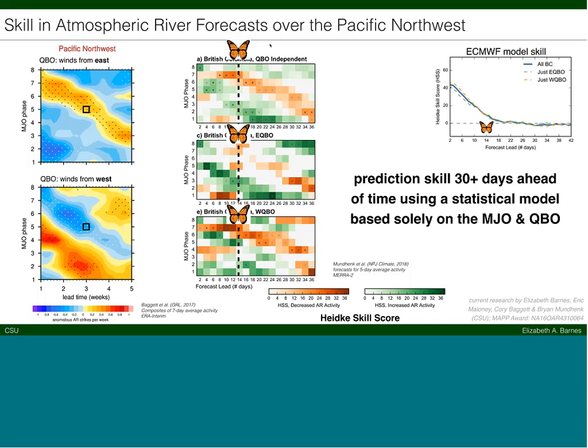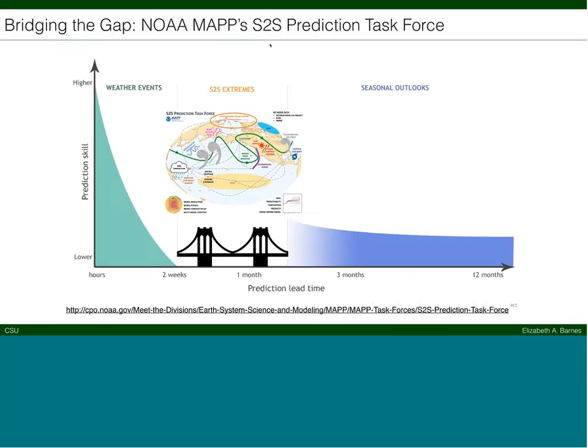With those three examples, I want to point out that the NOAA MAP S2S Prediction Task Force is working on many different facets of the S2S prediction problem: processes, approaches, model setups, what kinds of products are useful, how to assess skill, and how to achieve seamless prediction from weather to seasonal outlooks. Thank you for your time — I'm looking forward to the rest of the talks.